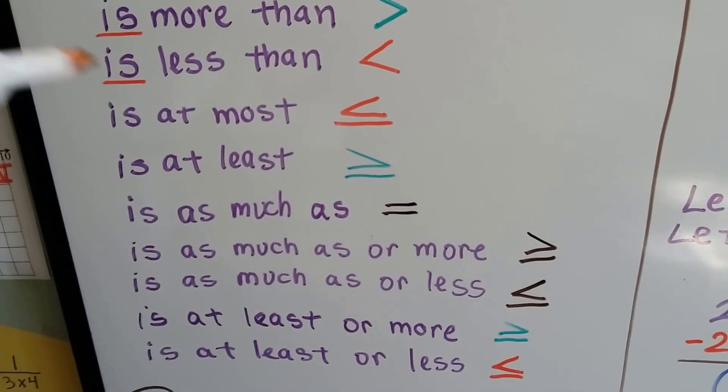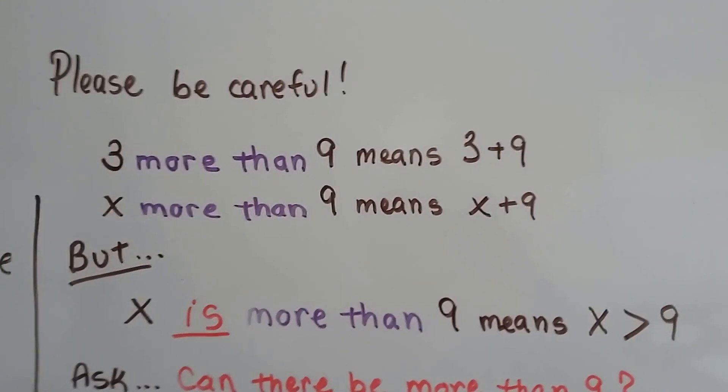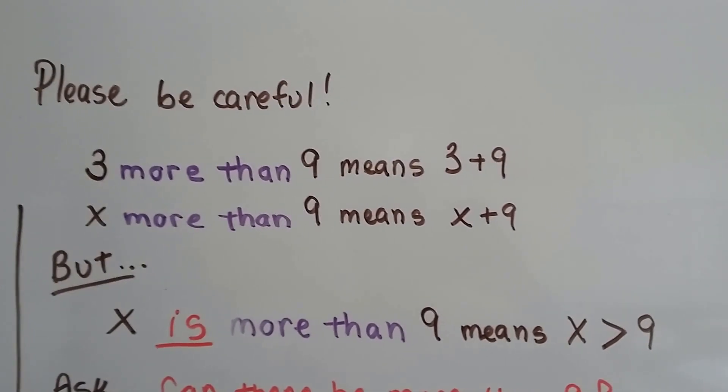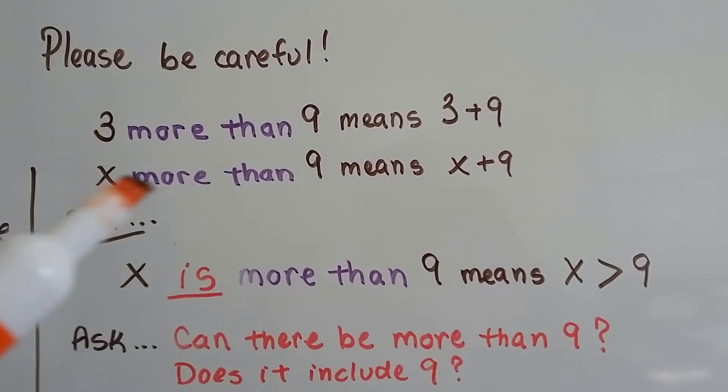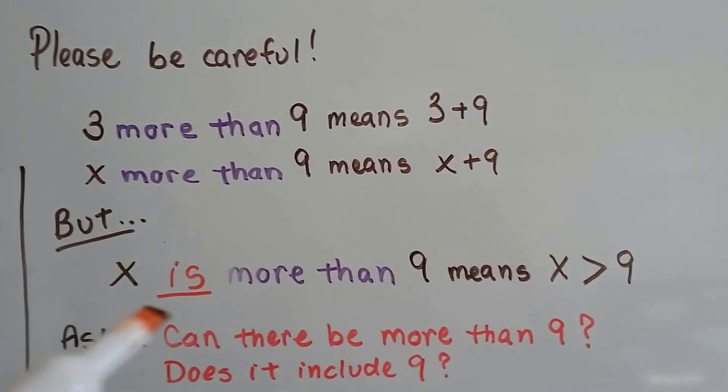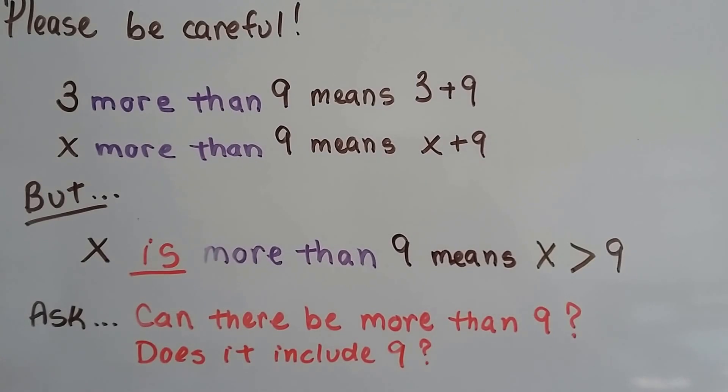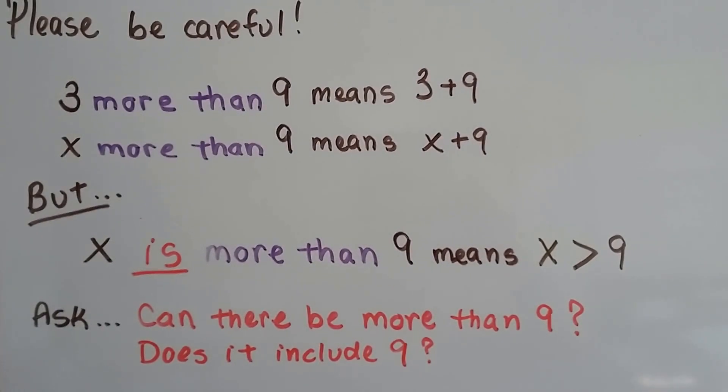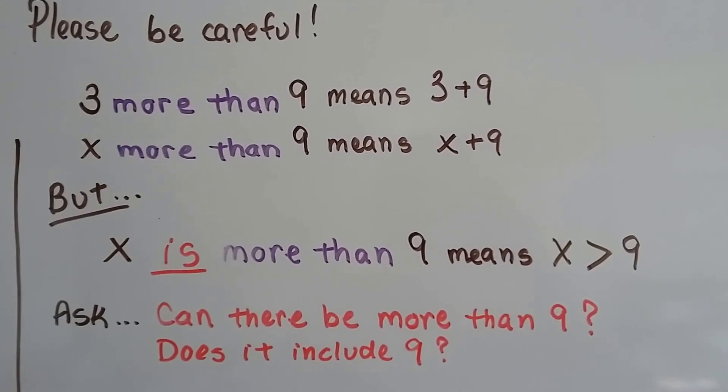And this is very important that it says is up here, and I'll show you why. You have to be really careful. If it says 3 more than 9, that means 3 plus 9. And if it says x more than 9, it means x plus 9. But when is it an inequality? When x is more than 9. So instead of just 3 more or x more, it says x is, and it's a variable. Because this is a variable and the word is is there, it becomes an inequality. x is more than 9 means x is greater than 9. Because we ask ourselves, can there be more than 9? It just says x is some amount more than 9. So yeah, it could be. Does it include 9? Nope. Not in this one. So it's not a greater than or equal to.